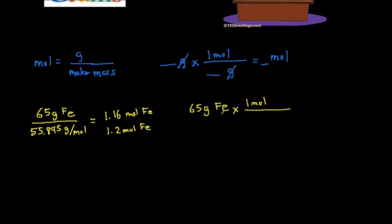And then the molar mass of iron on the bottom, which is 55.845 grams of iron. And then notice I have grams of iron on the top, grams of iron on the bottom here. So they're going to cancel each other out and you get 1.16 and then this unit, moles of iron, carries over. So we get 1.16 moles of iron.